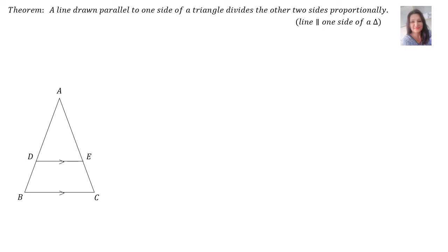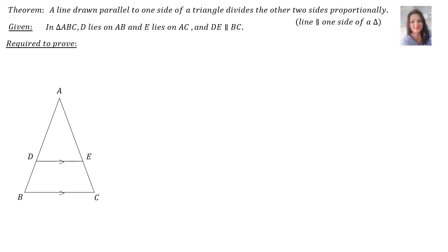Now, when we want to prove a theorem, there is a given part, and the given part we find inside the words. In this case, it is: in triangle ABC, D lies on AB and E lies on AC, and DE is parallel to BC — a line drawn parallel to one side of a triangle. What is required to prove? The theorem says it divides the other two sides proportionally, which translates to: AD over DB is equal to AE over EC. The sides are in the same proportion.